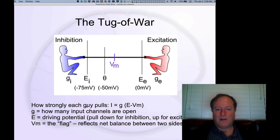The reason we call this also the reversal potential is that if the membrane potential were to go below that value, then the sign of the force would actually reverse. So instead of pulling, our inhibitory guy would actually push.